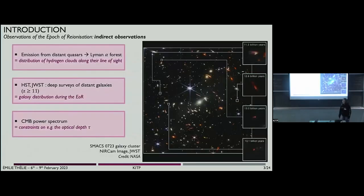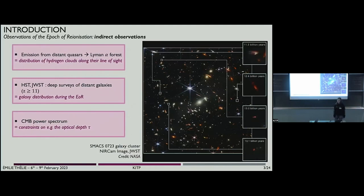These bubbles grow and, at the end of the epoch of reionization, percolate in the universe to give us the universe we know today with its totally ionized gas. This epoch is observed nowadays with different kinds of indirect observations — for example, with Lyman-alpha, which can probe the distribution of hydrogen clouds during this epoch. We can also directly see some galaxies during this epoch with the Hubble telescope, and nowadays with the James Webb telescope. We can also probe the optical depth with the CMB power spectrum.